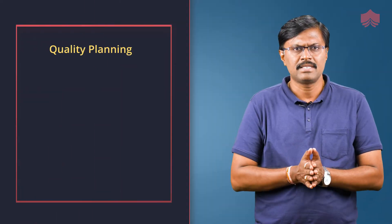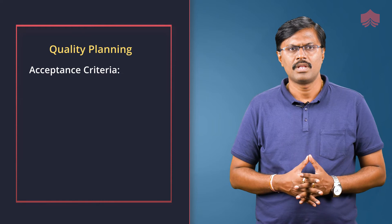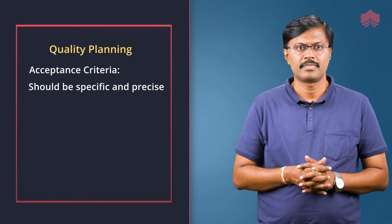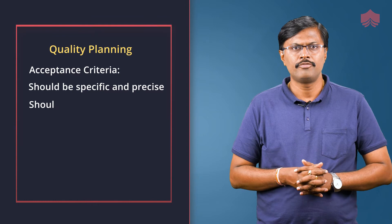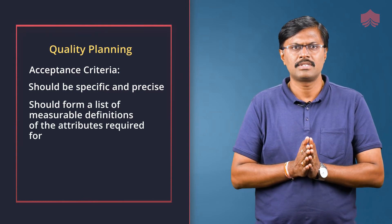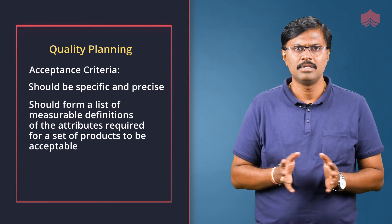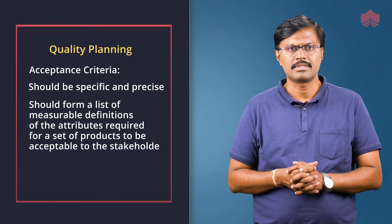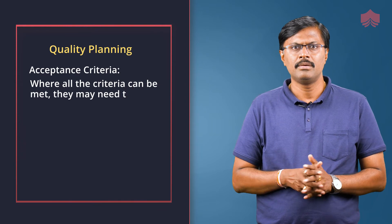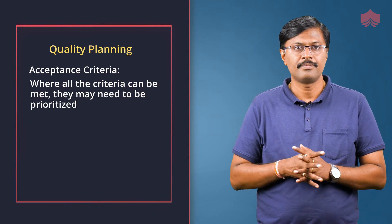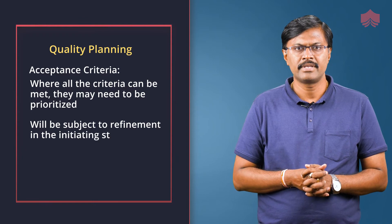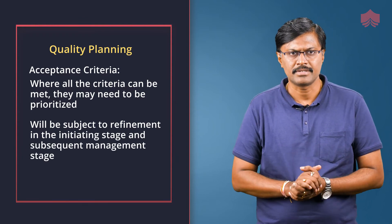The next step is acceptance criteria. Acceptance criteria should be specified and precise. It should form a list of measurable definitions of the attributes required for a set of products to be acceptable to the stakeholders. Where all the criteria cannot be met, they may need to be prioritized. It will be subjected to refinement in the initiating stage and the subsequent management stages.